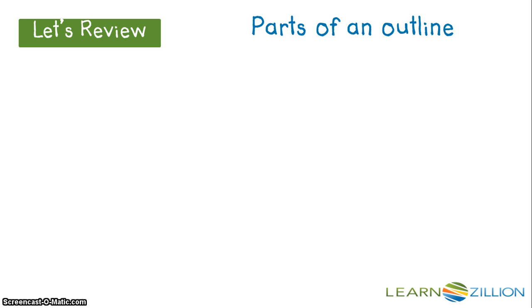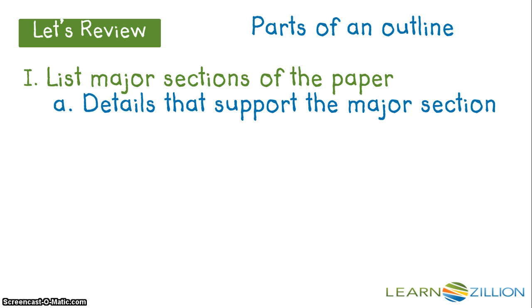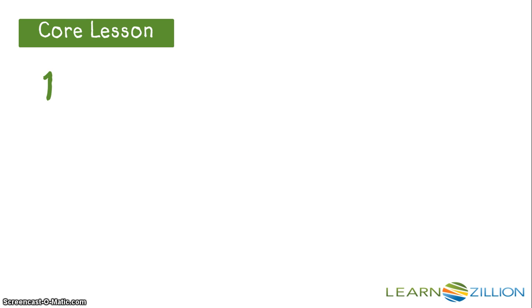So the more familiar you are with the outline process, the easier your resume writing will become. Let's review the parts of an outline needed for an essay. First, you have the major sections of the paper — these usually become your topic sentences. Then, under that, you give the details that support the major section or topic sentence of each argument. Then, under that, you give the textual evidence you will use to support your details. So, when you're trying to organize your claims and counterclaims in an outline, you should follow these three steps.